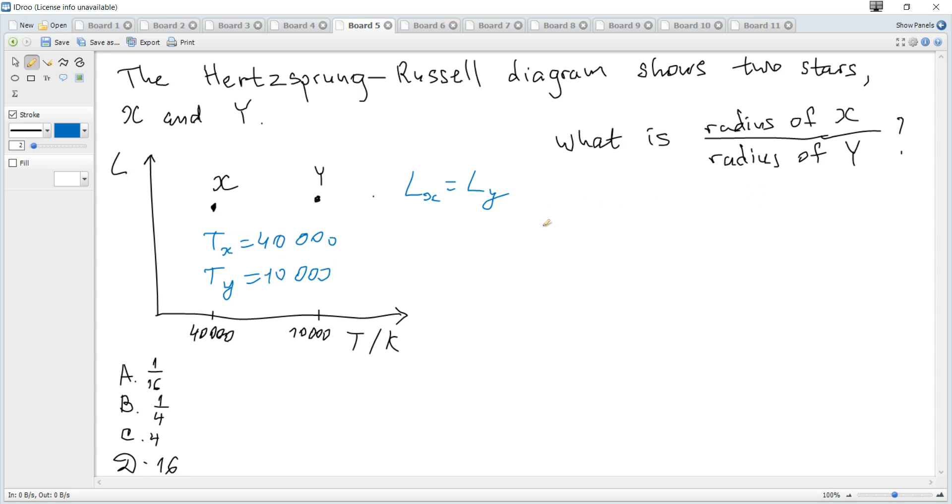Since it's about luminosity, we can consider the formula: luminosity is some constant times surface area, which is 4πr² times temperature to the power of 4. Since Lx equals Ly, it becomes Rx²Tx⁴ equals Ry²Ty⁴.